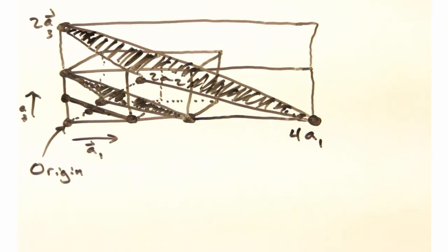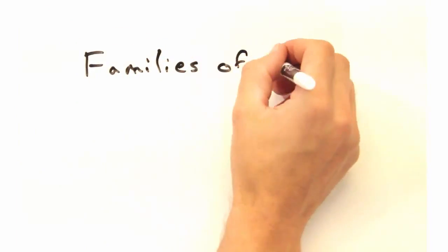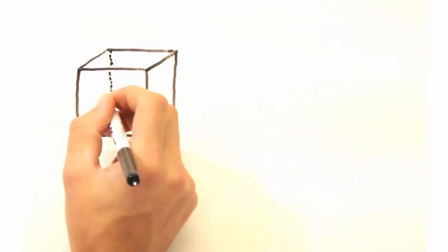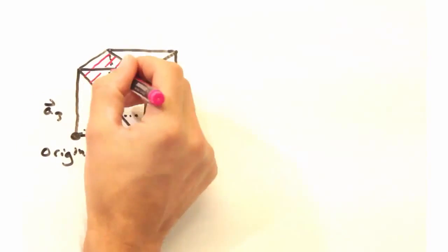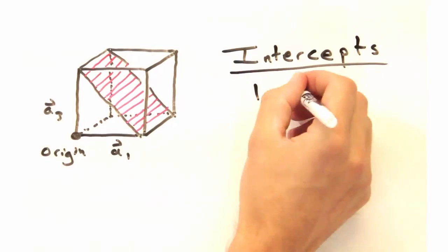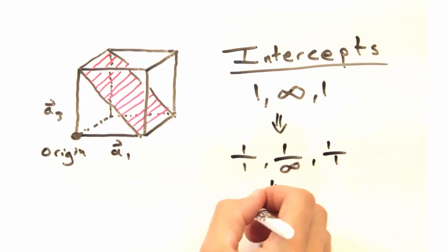But what if we have a plane like this, where it never crosses an intercept like this one? Would we just treat that intercept as infinity, and when we take a reciprocal of 1-1-1, we'd get the 1-0-1 plane?